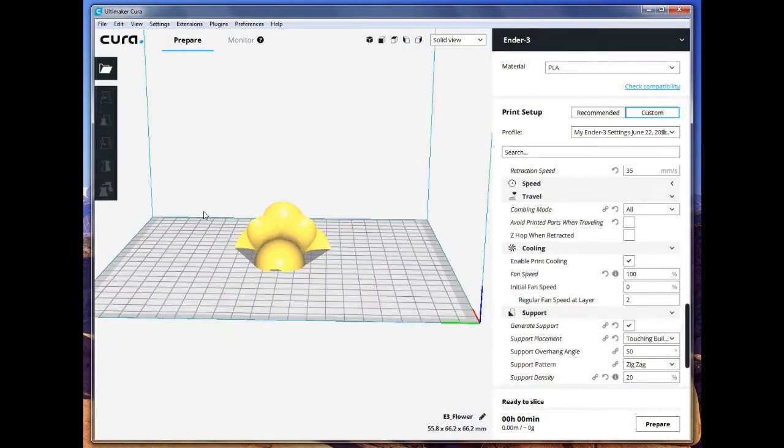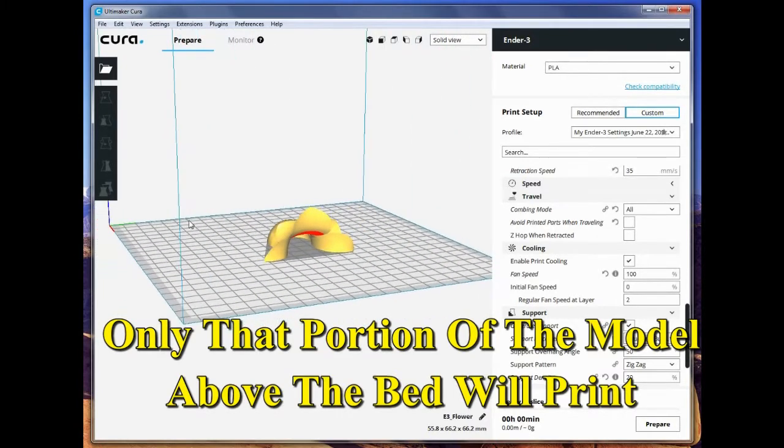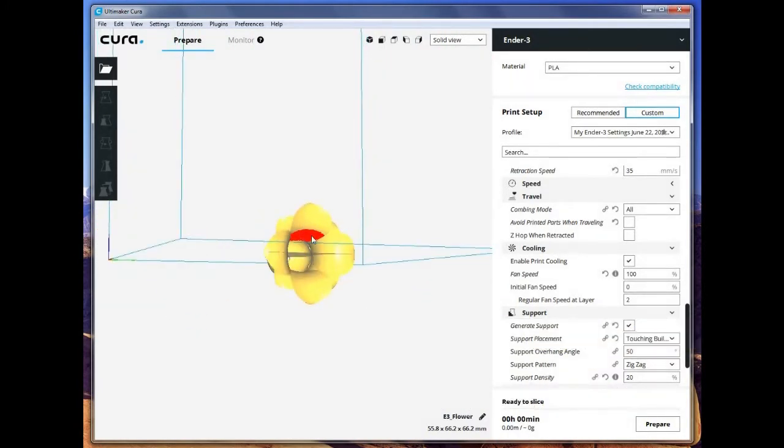Now only that portion which is above the bed will print. The other half will not print, and you can see where it's needing support. It's highlighted in red. Go ahead and slice it.